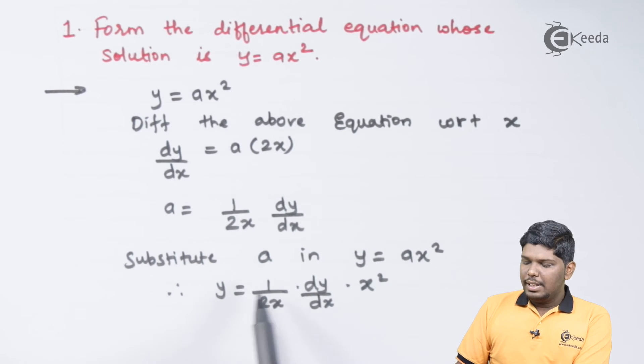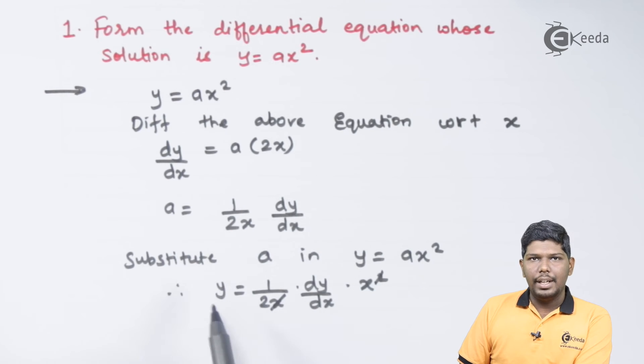This will give you y = (1/2x)(dy/dx), that is the value of a, into x². On further solving, x will be cancelled. You can take 2 on the left hand side.